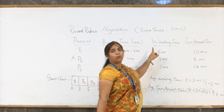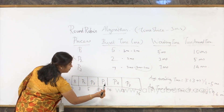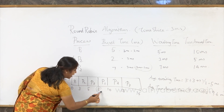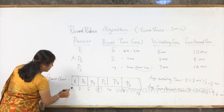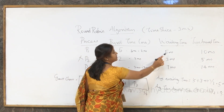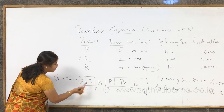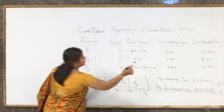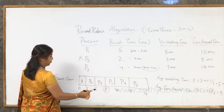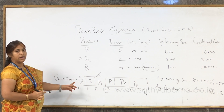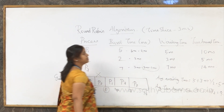Now we calculate waiting times from the Gantt chart. P1 was last seen waiting until the 8th millisecond, but 3 milliseconds were spent executing, so 8 minus 3 equals 5 milliseconds waiting time. P2 was waiting for 3 milliseconds. P3 was waiting until the 10th millisecond, but 3 milliseconds were spent executing, so 10 minus 3 equals 7 milliseconds waiting time for P3.